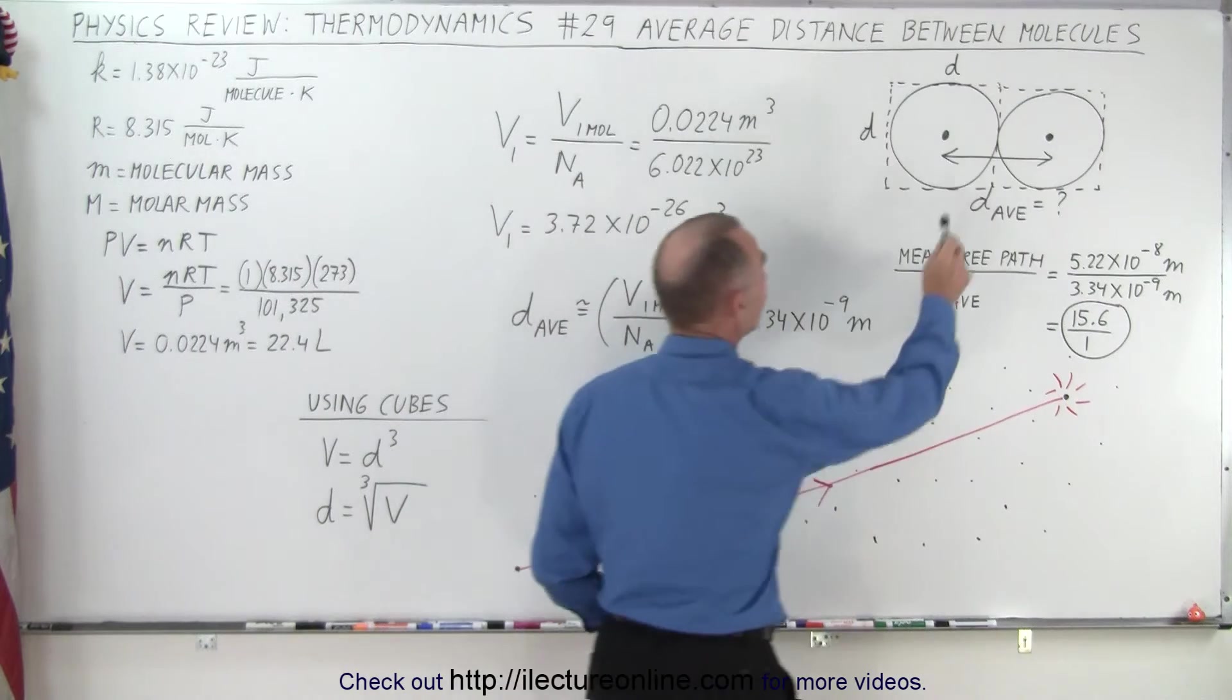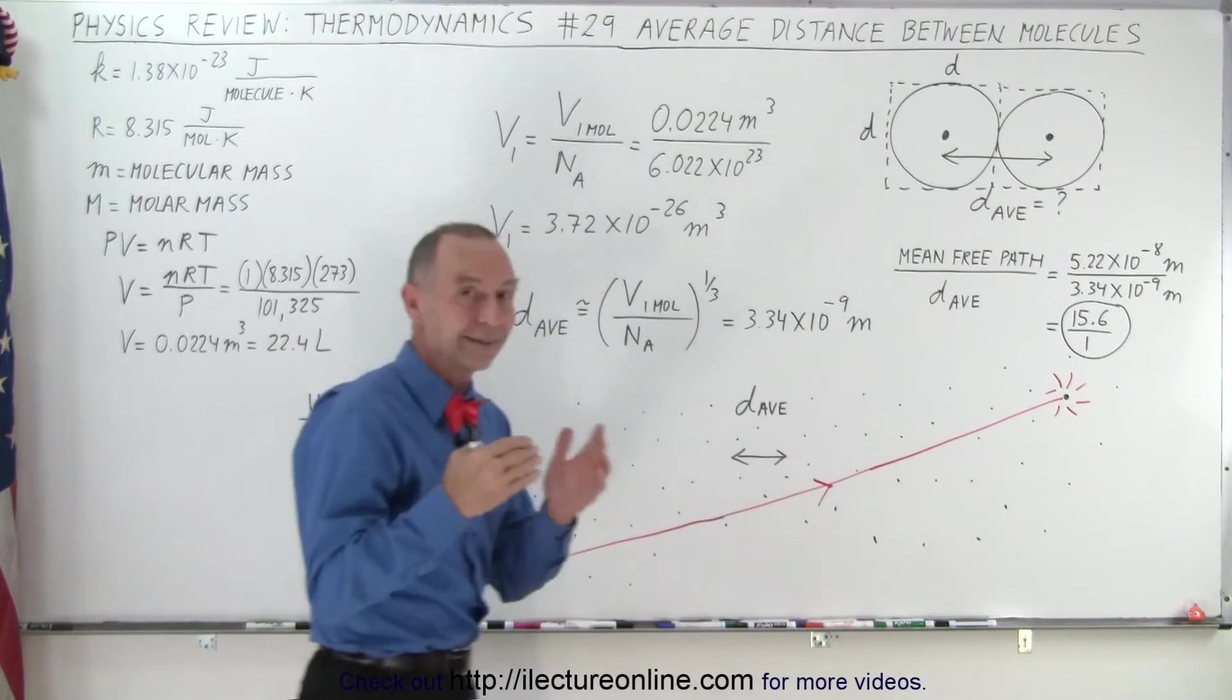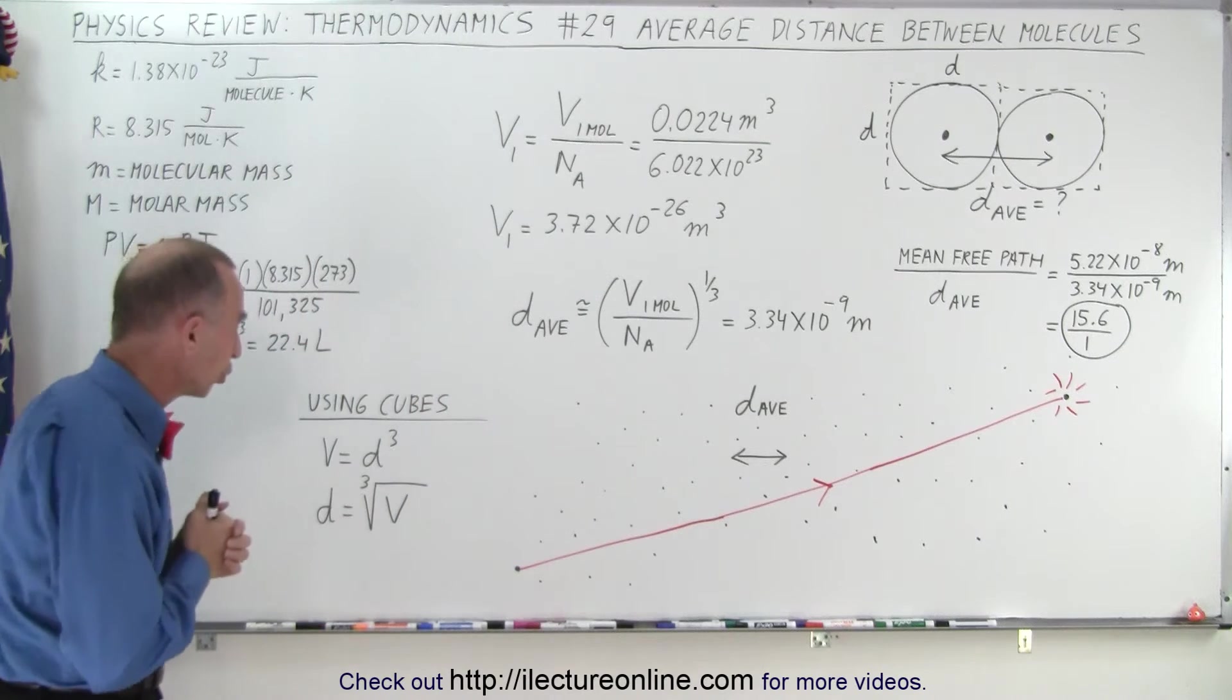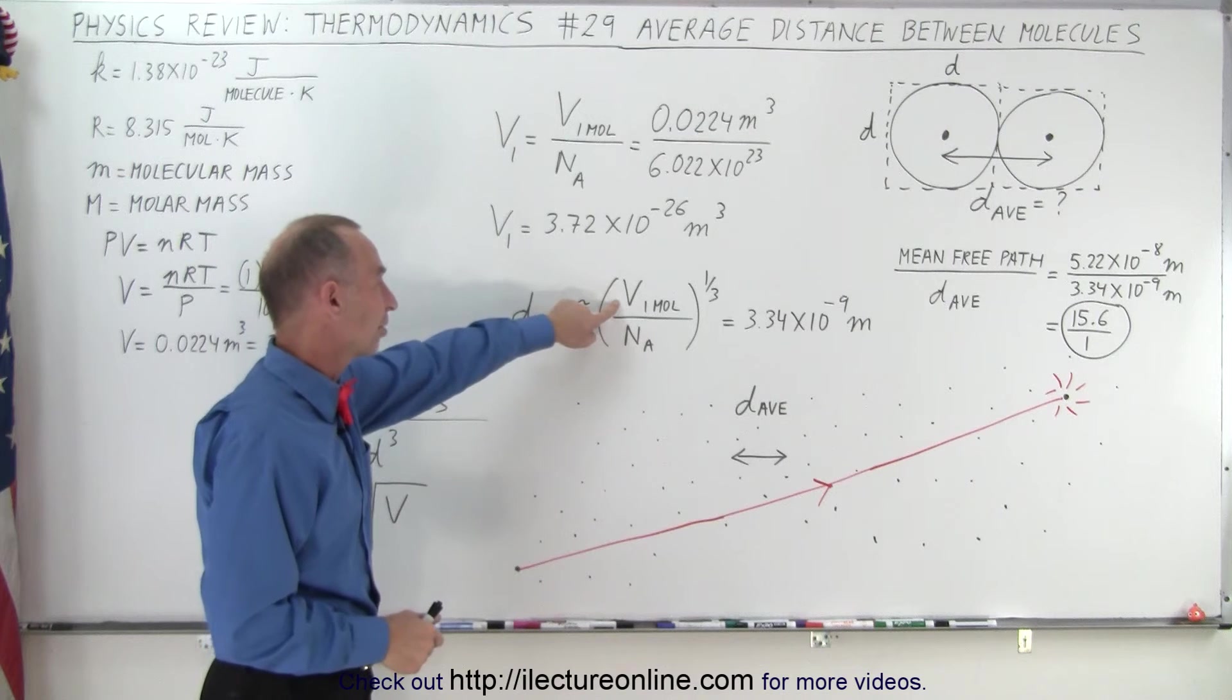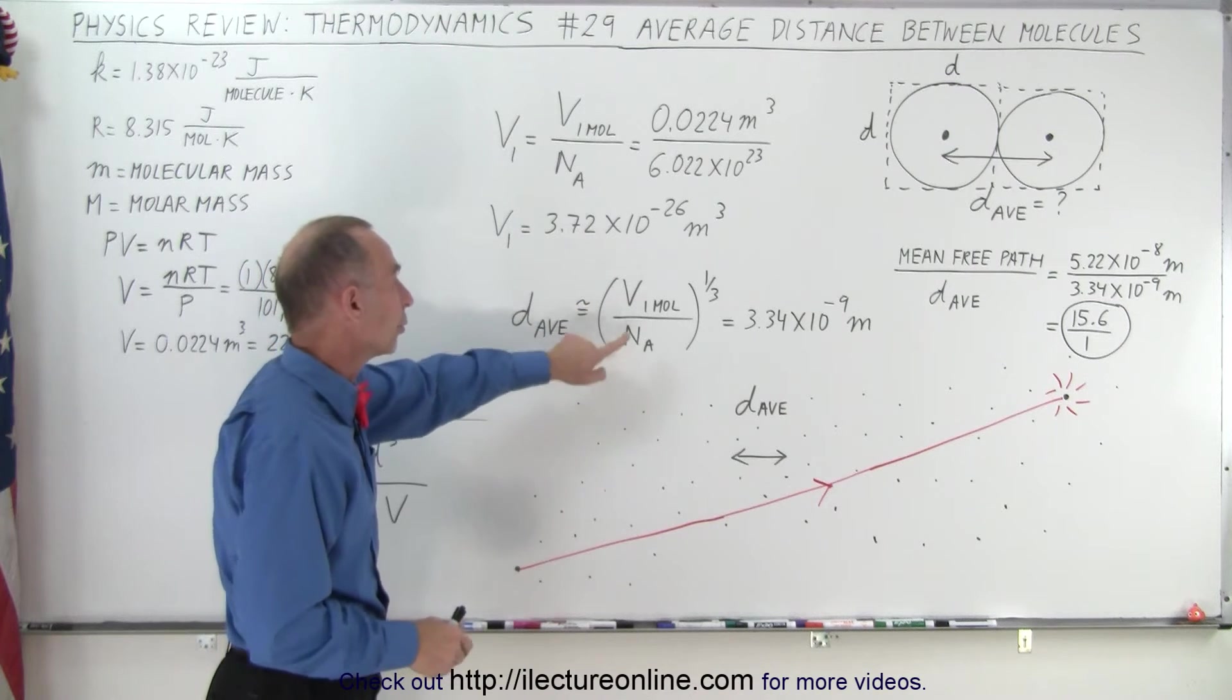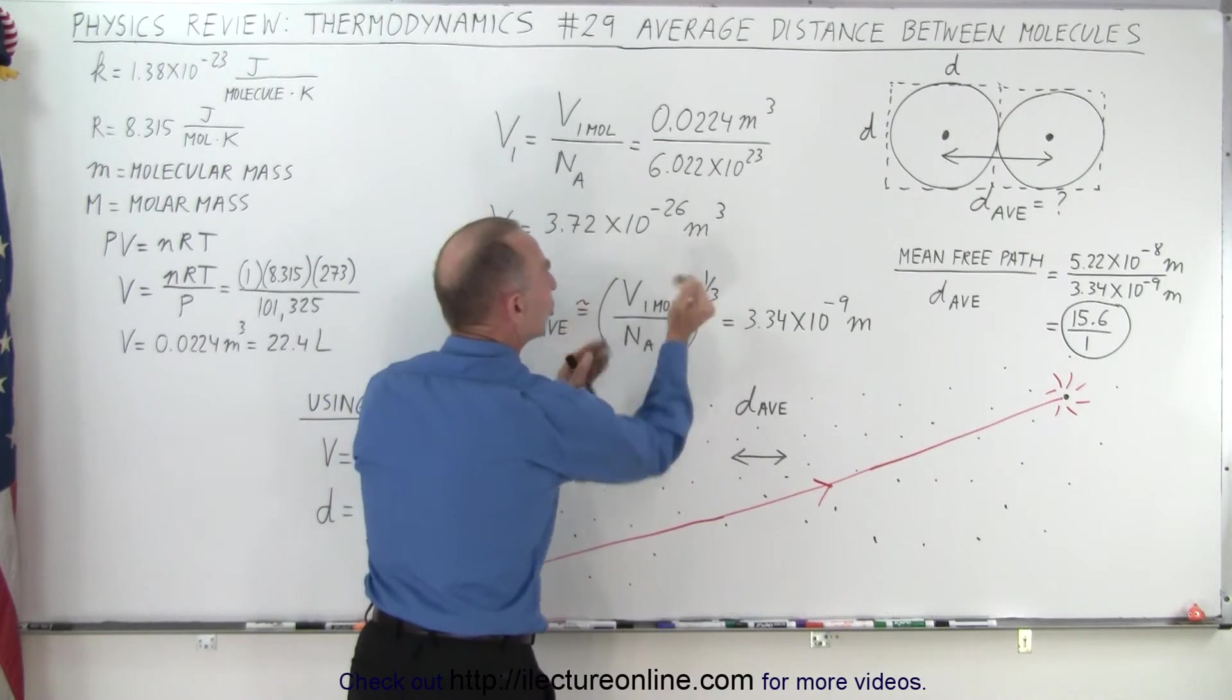And of course, that means that the average distance between molecules would be equal to the distance of one of the sides of those cubes. So the average distance would be equal to the volume of a single molecule divided by Avogadro—oh I'm sorry, the volume of a mole divided by Avogadro's number, but then we take the cube root of that.